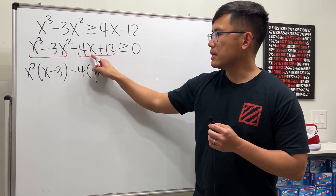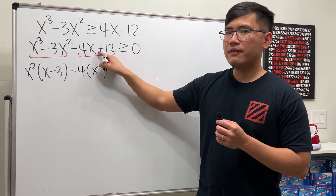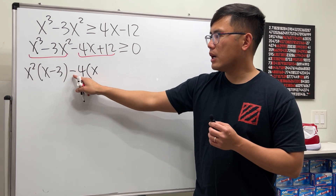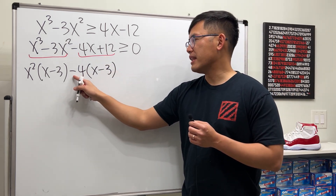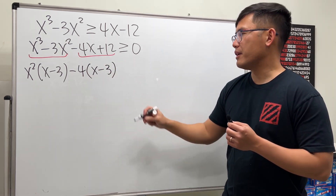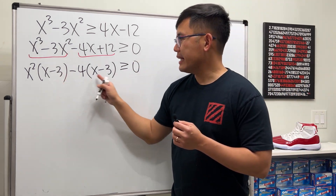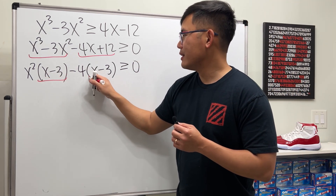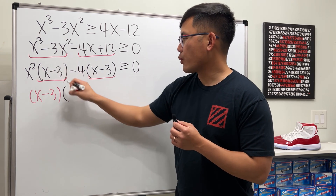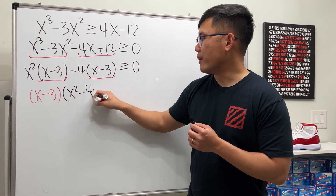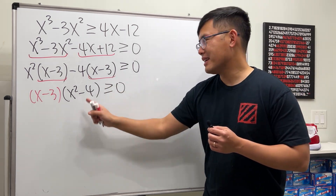We have negative 4x, but we took out negative 4, so inside it's just x. We have 12 but factored out negative 4, so inside is negative 3 — just do 12 divided by negative 4 to get negative 3. Now (x minus 3) appears in both groups, so we factor that out to get (x minus 3)(x² minus 4), still greater than or equal to zero.